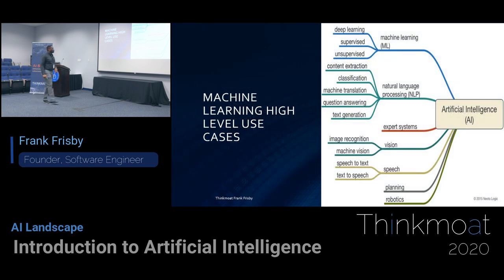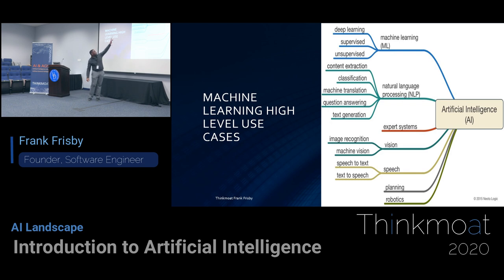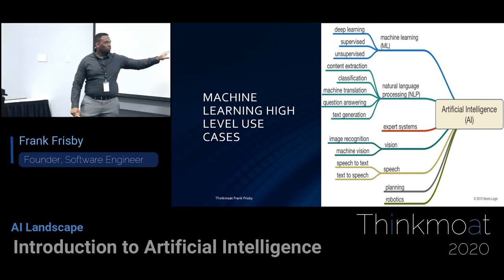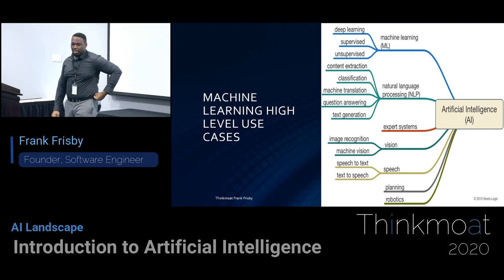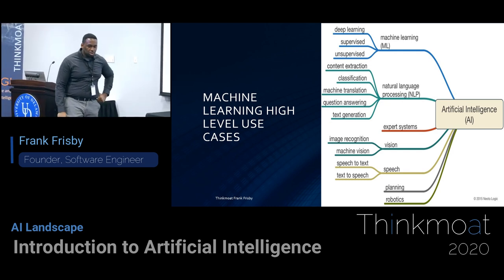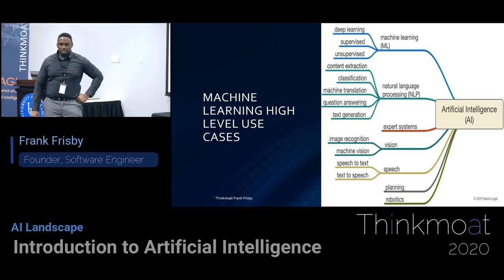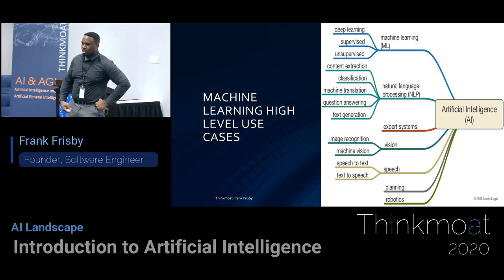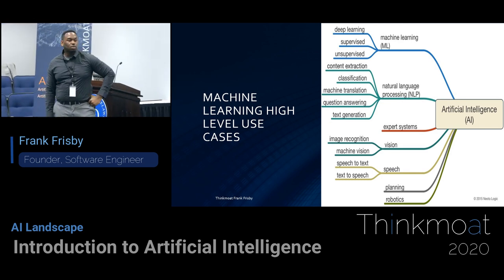From a high-level view, machine learning includes natural language processing, expert systems, vision, and speech — which is what a lot of things you use in your phone now use — but it's also planning and robotics. People don't talk about planning much, but it's probably one of the big parts that's going to be used in AGI, because it needs to have the concept of understanding, planning, and figuring things out.